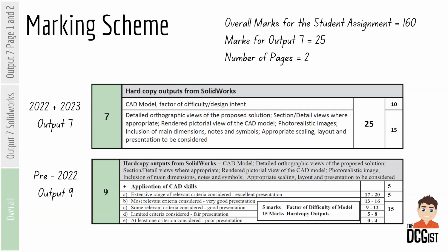So to start off with, we'll have a look at the marking scheme. As you'll see here, here's a comparison between pre-2022 output 9 and the current output 7, and you'll see that they're actually the same. But now what we have is they've just cleaned up the marking scheme a little bit. Originally they had all of the stuff in for your application of your CAD skills, but now they're all part of the CAD model and the factor of difficulty — that's 5 marks plus the application of CAD skills 5 marks — so 10 marks there, and then you still have the same 15 marks that go for the hard copy outputs.